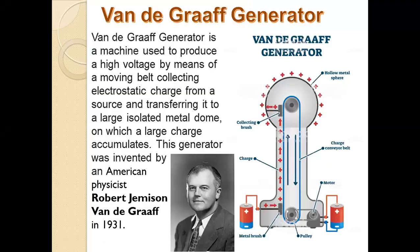The second type is the Van de Graaff generator. The Van de Graaff generator produces high voltage. High voltage is produced by the source, which produces potential on the belt, and the dome-like shell accumulates charge. This generator was invented by American physicist Robert Jemison Van de Graaff in 1931, and it is named after him.